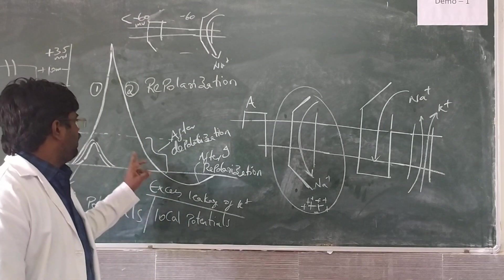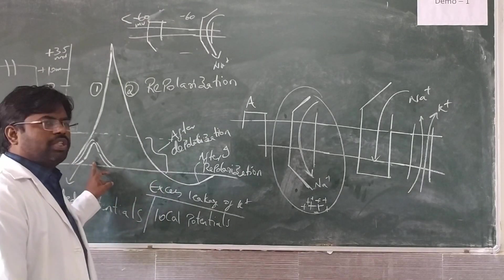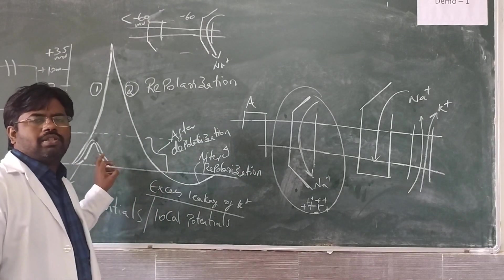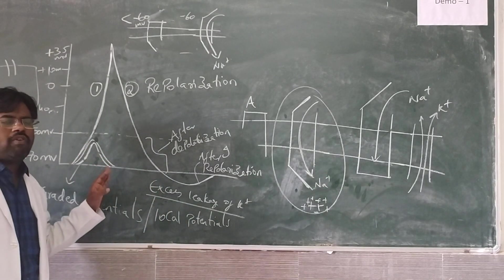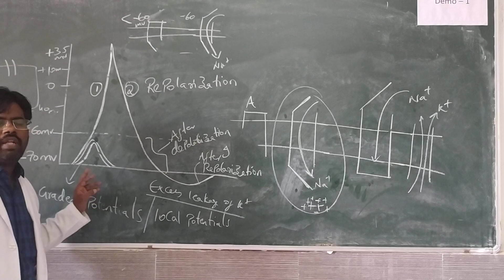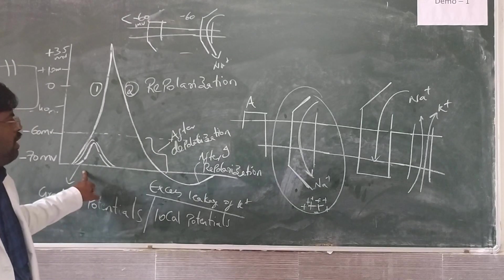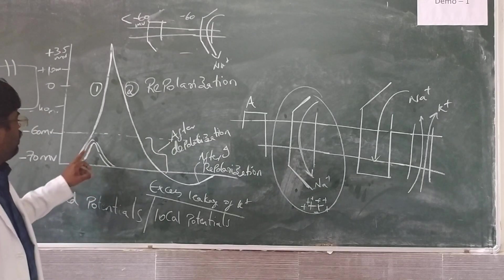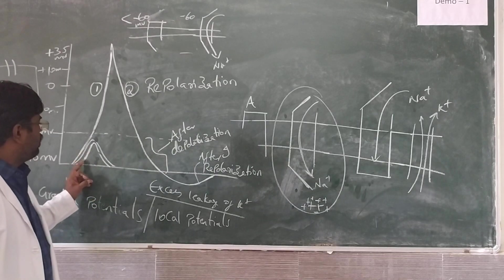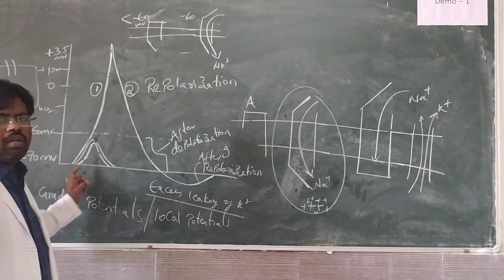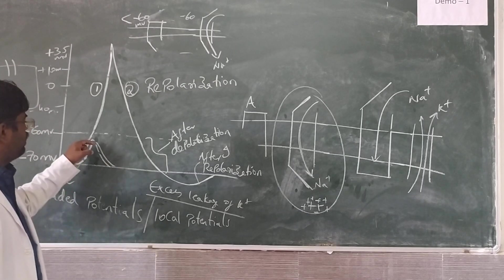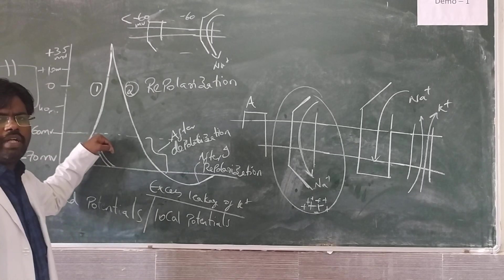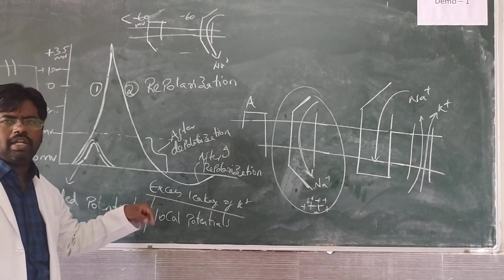One thing we have to observe very carefully: before giving a sufficient stimulus, initially a very light stimulus is given. This gives a small increase in amplitude, and this amplitude dies off instantly.